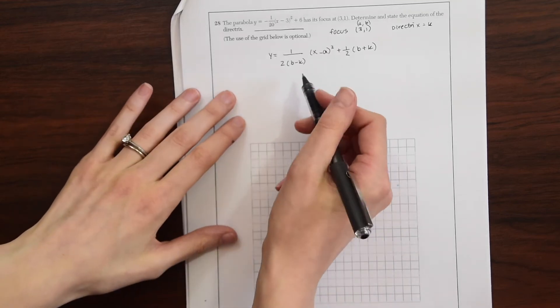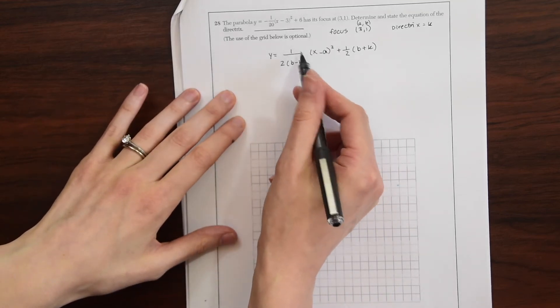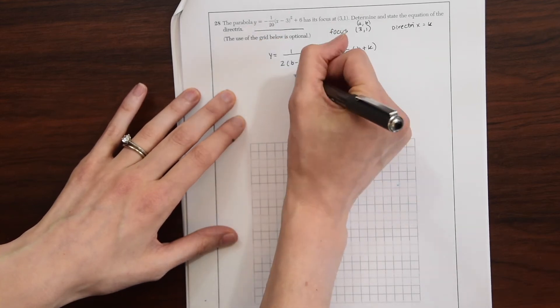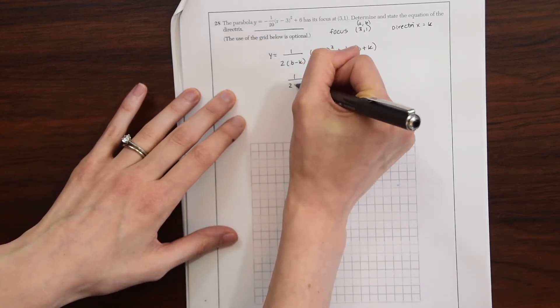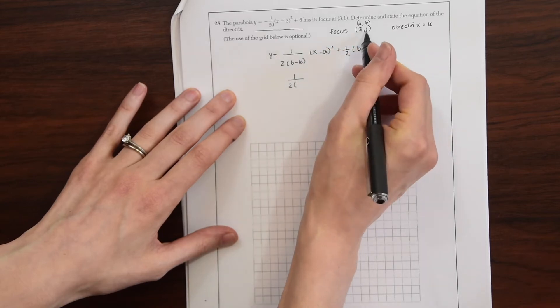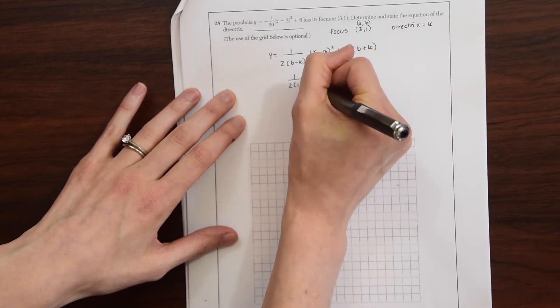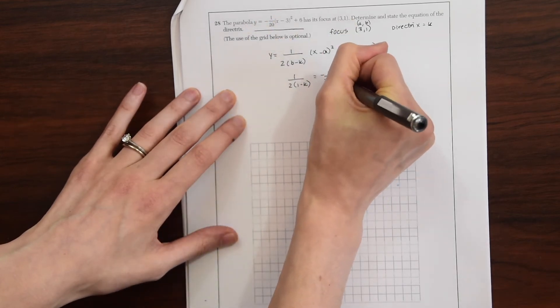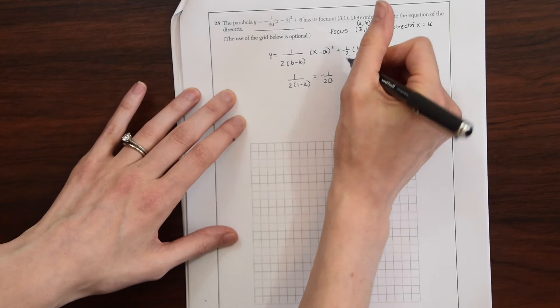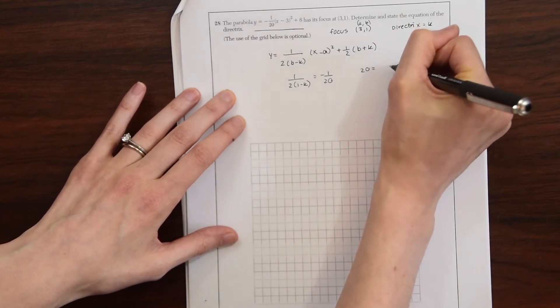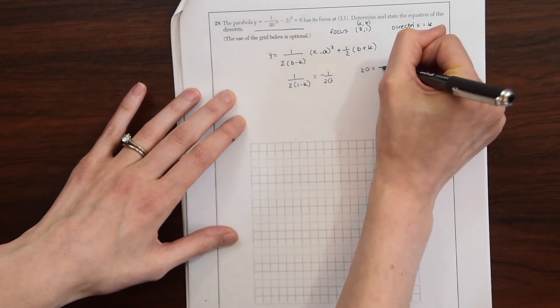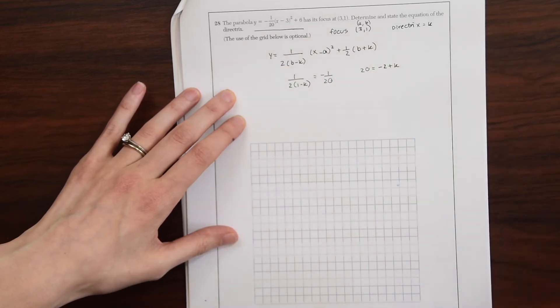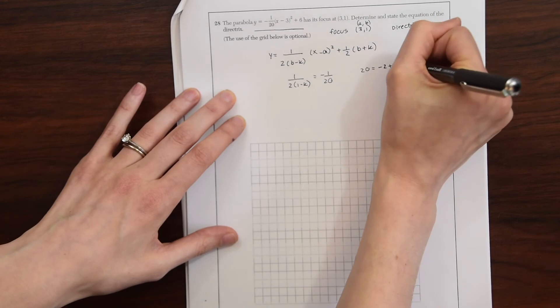Because if we just take a little section right here, we can see that it lines up with the equation they gave us. So if we look at 1 over 2 times b, which we know is 1 because they give us the focus, minus k, which is what we're trying to find, is equal to negative 1 over 20, we'll be able to find it. So we could cross multiply and we get 20 is equal to negative 2 plus 2k.